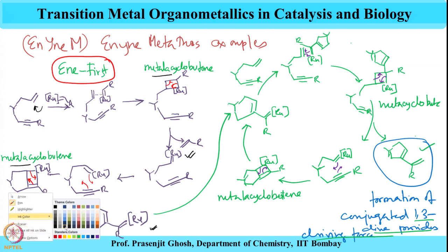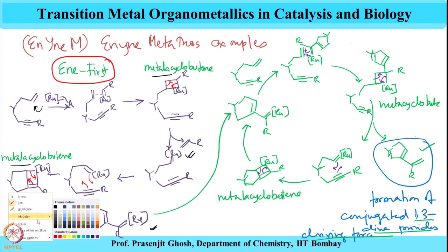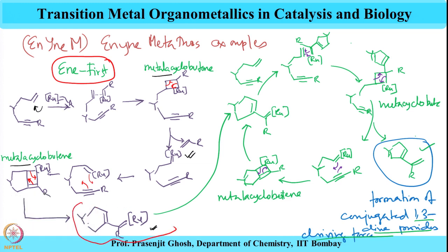One thing which is important to note is that this vinyl carbene species of the substrate — these two species are exactly the same species and they get translated from one cycle to another cycle and carry out this enyne metathesis.